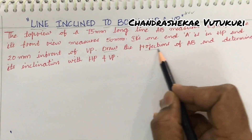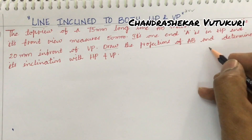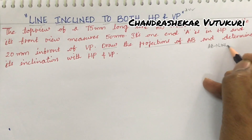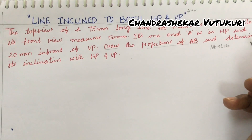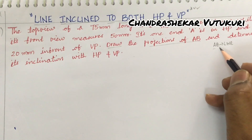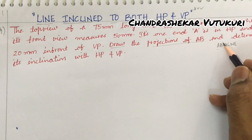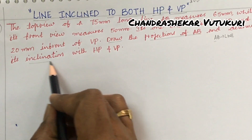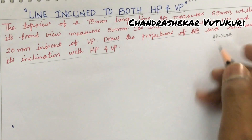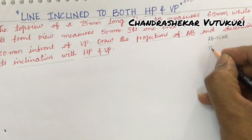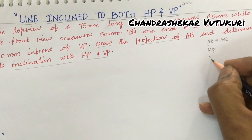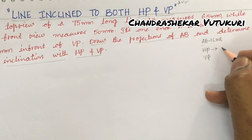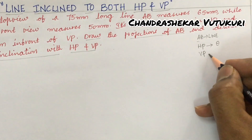By looking at the question, draw the projections of AB — here AB is said to be a line. Before going into the question, you should know whether it is a line, a plane, or a point by looking at the term AB and the question states inclination with HP and VP. It is inclined to HP as well as VP. When a line is inclined to HP, it is represented with the symbol theta.